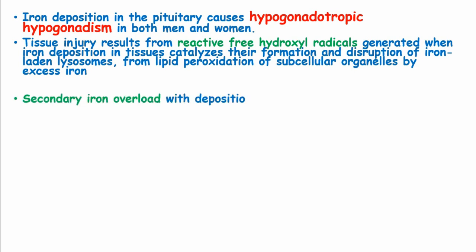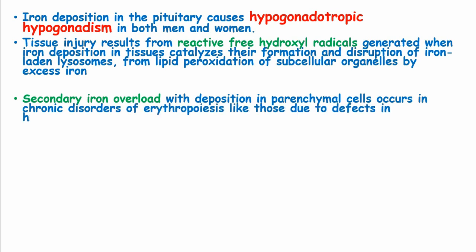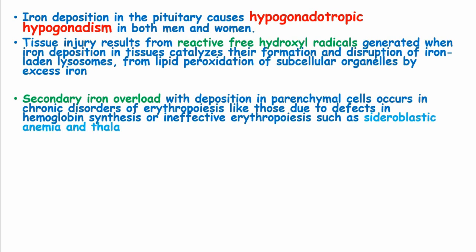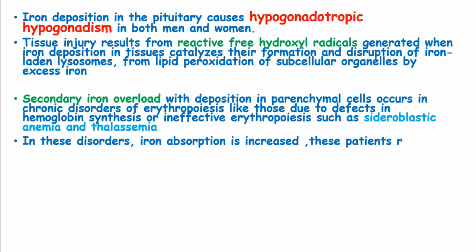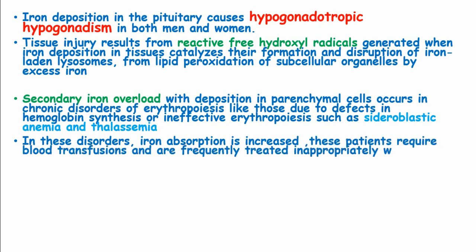Secondary iron overload with deposition in the parenchymal cells occurs in chronic disorders of erythropoiesis, such as those due to defects in hemoglobin synthesis and ineffective erythropoiesis, such as sideroblastic anemia and thalassemia. In these disorders, iron absorption is increased and these patients may require blood transfusions, which if given inappropriately, lead to iron overload.